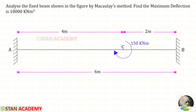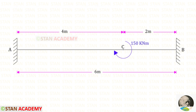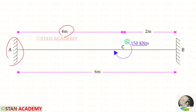Hello everyone. Today we are going to analyze this fixed beam by Macaulay's method. The span of the beam is given as 6 meters. This beam carries a concentrated moment of 150 kilonewton meters at a distance of 4 meters from the left support. The concentrated moment is acting in the clockwise direction.